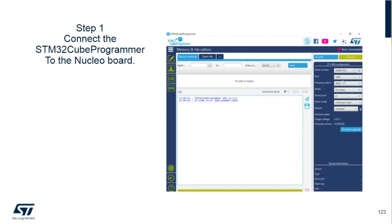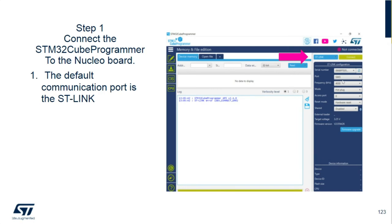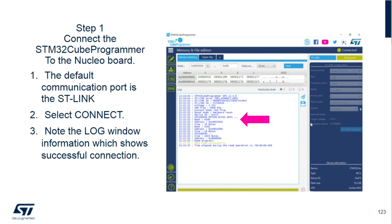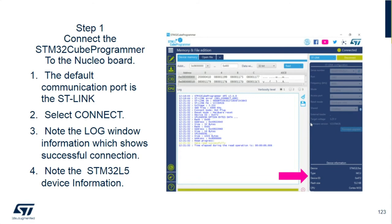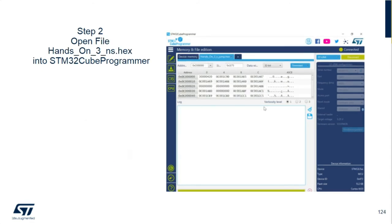This brings us to the actual downloading of the hex files to see if they both work. We're going to connect CubeProgrammer to the ST-Link on the Nucleo board. Let the default ST-Link settings stay as-is and hit the Connect button as we've done twice before. This will confirm you successfully connected to the Nucleo board. Then open the hands-on number three secure file first.